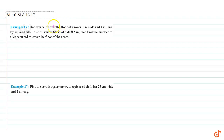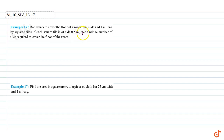In this video, we are going to solve examples 16 and 17. Example 16: Bob wants to cover the floor of a room 3 meters wide and 4 meters long with square tiles. If each square tile is of size 0.5 meters, then find the number of tiles required to cover the floor of the room.